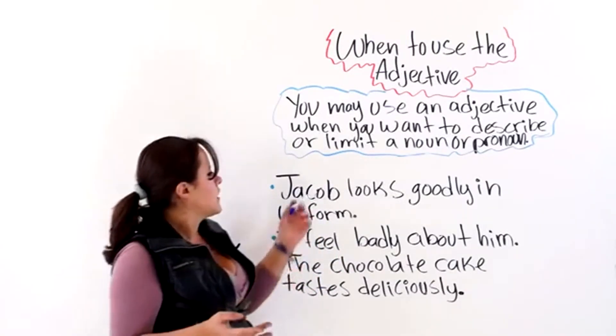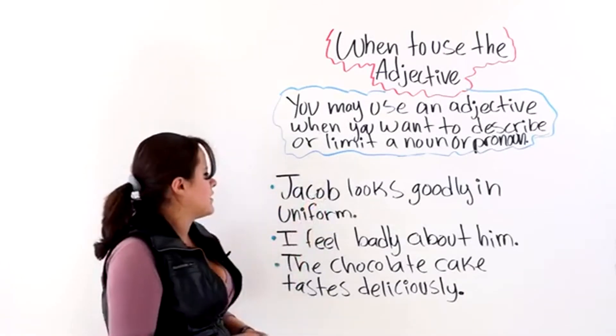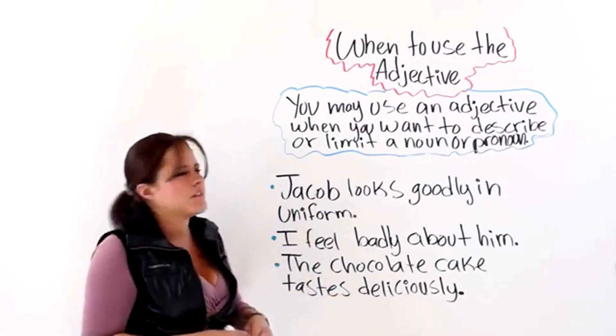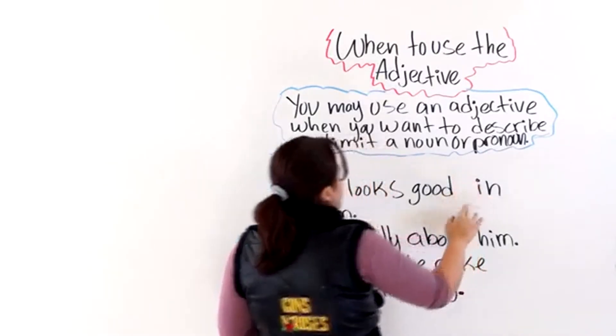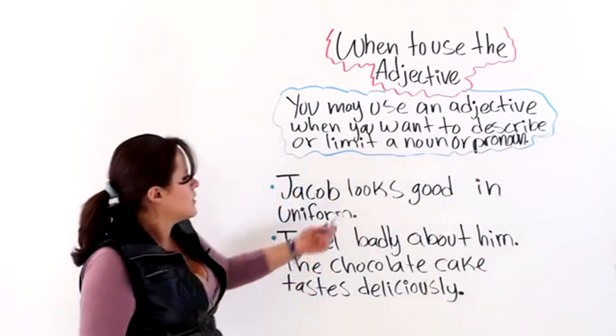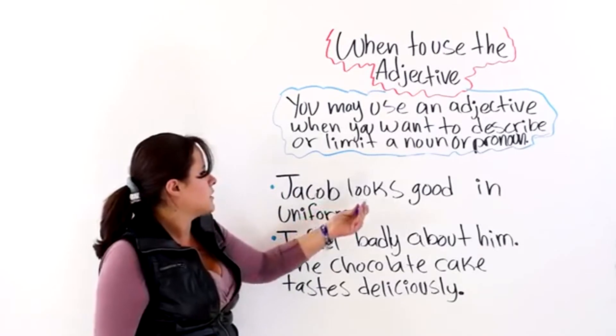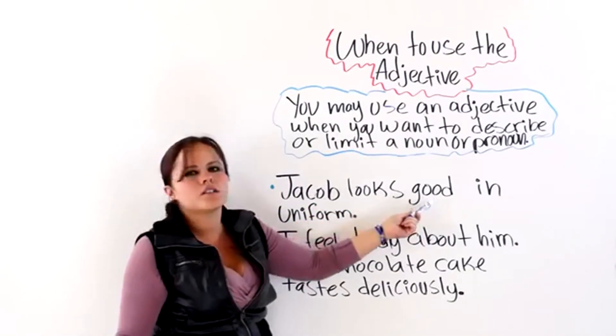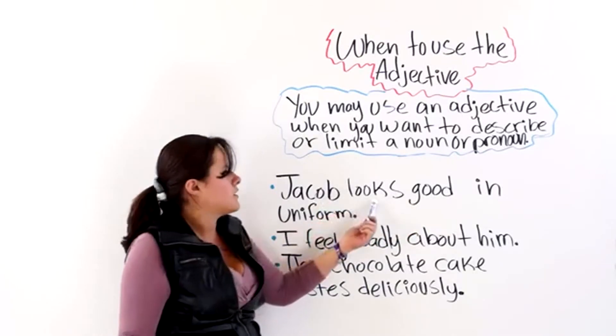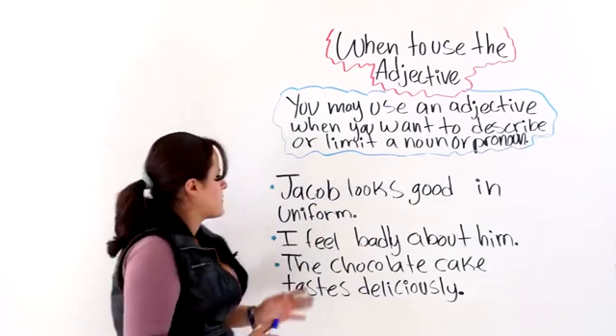He looks, I mean, Jacob looks goodly in uniform. That's not even a word. So, we are going to say good. Adjective. Jacob, linking verb, looks good. But good is describing Jacob, not this verb. So, it is correct.